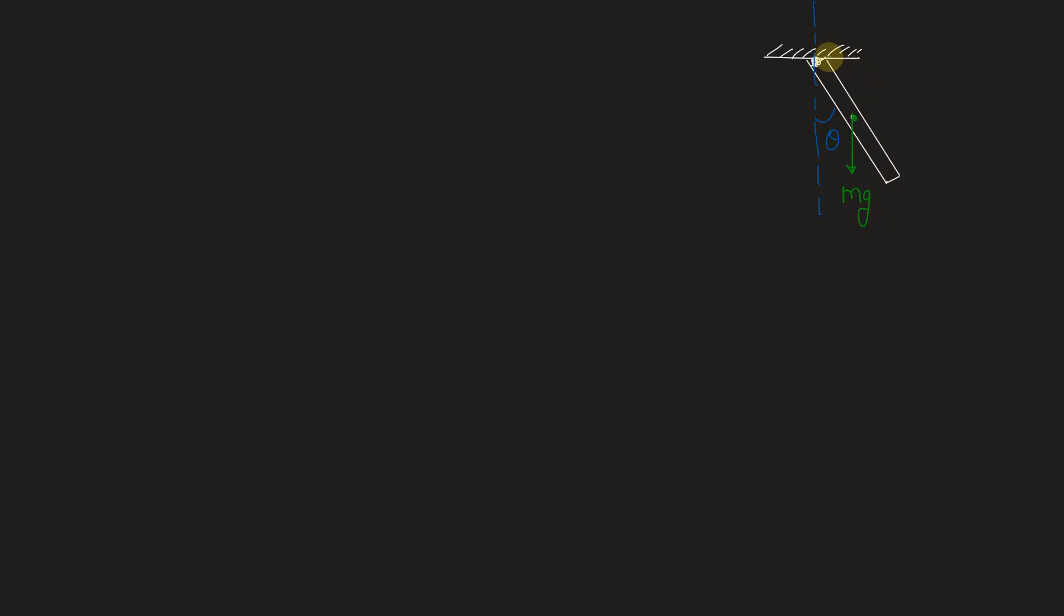This distance from the point of suspension is given to be 250 mm. Let's write the given things now. Radius of gyration is given, that is k as 100 mm from the point of suspension. Let this distance be l, 250 mm.